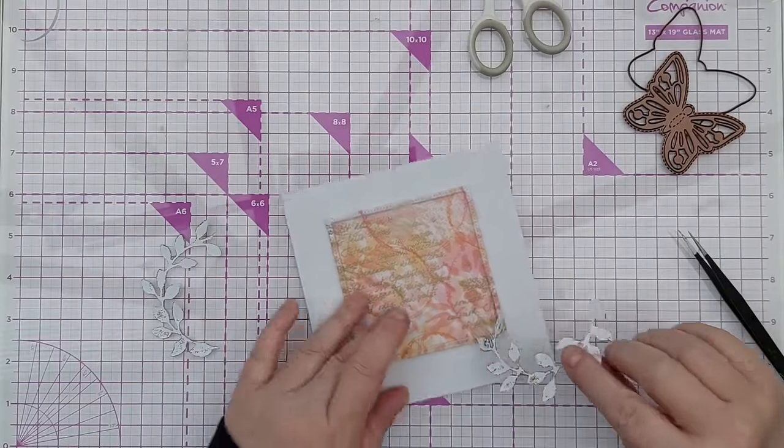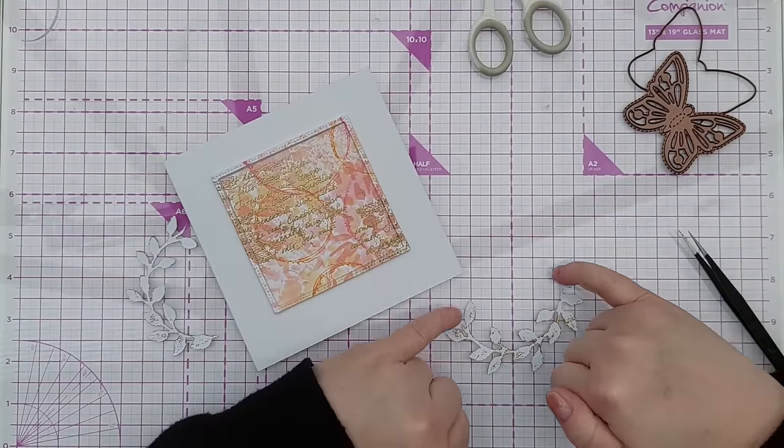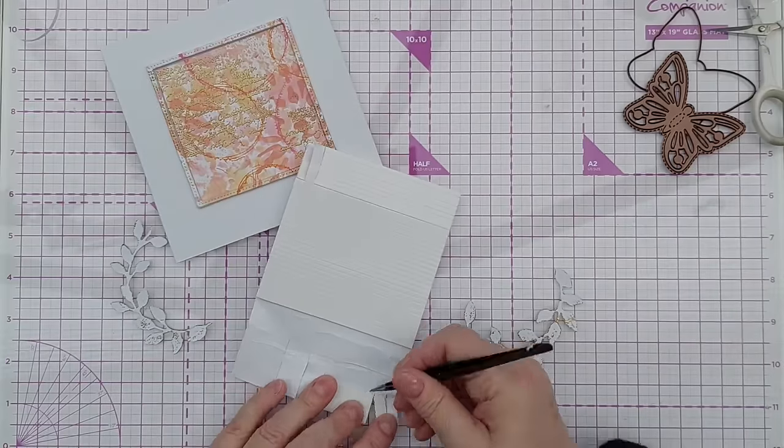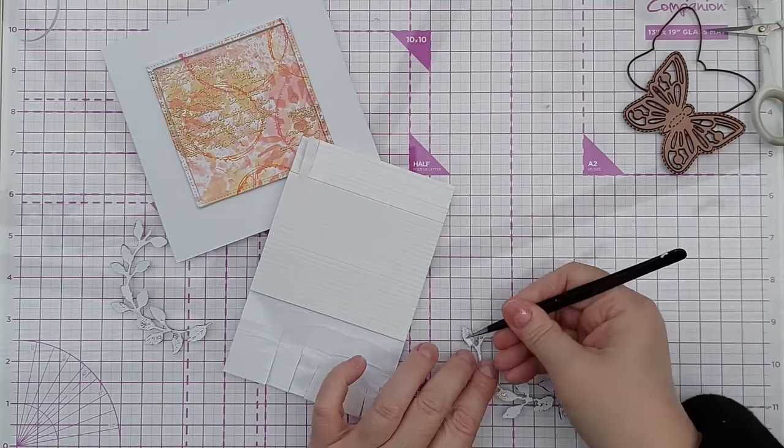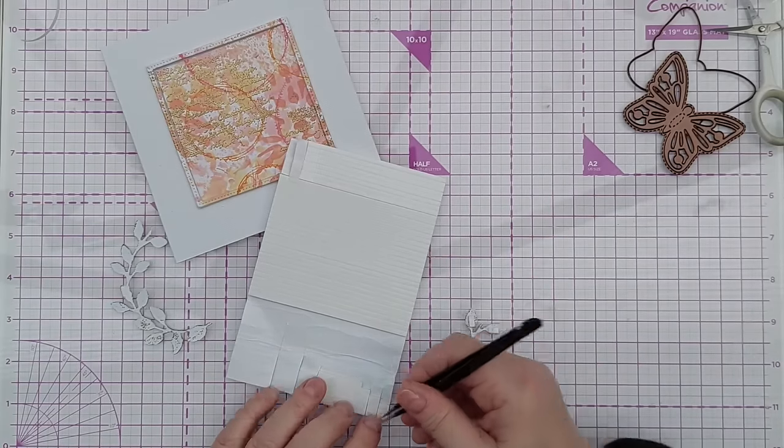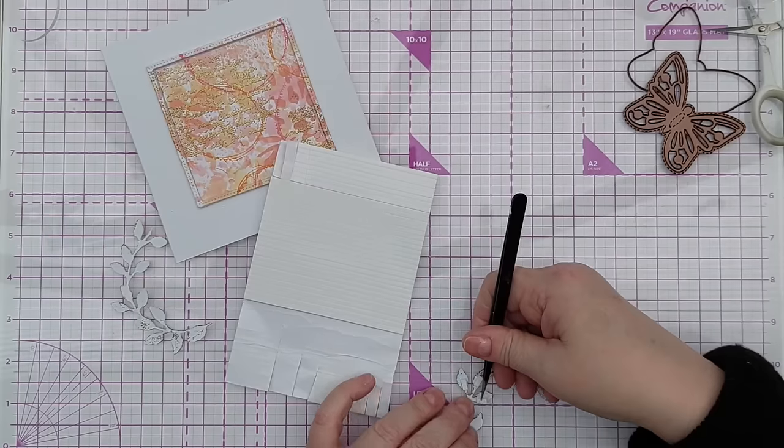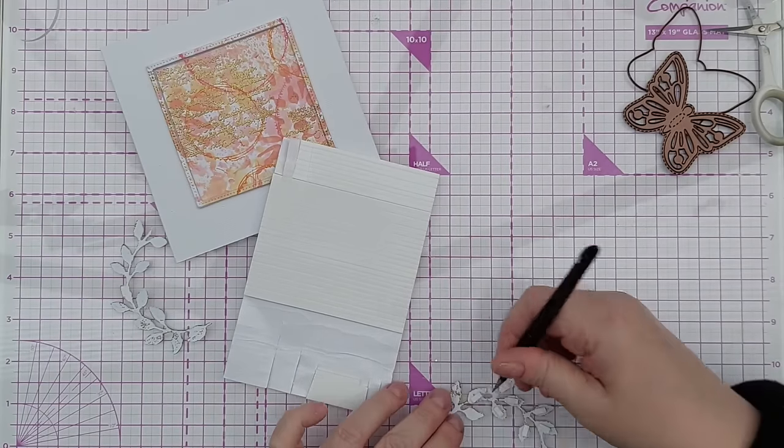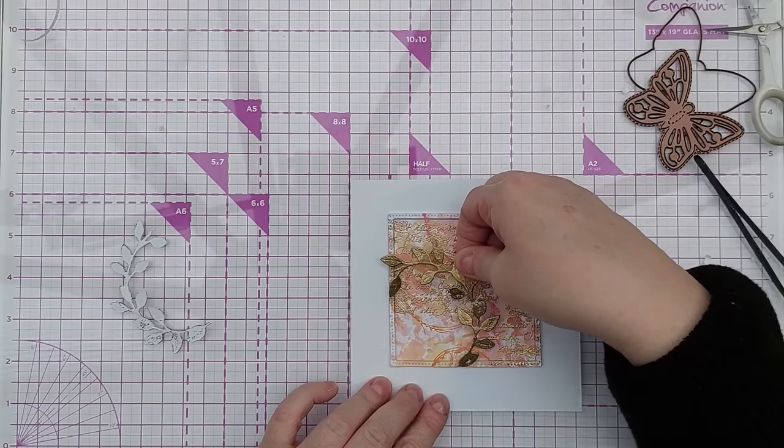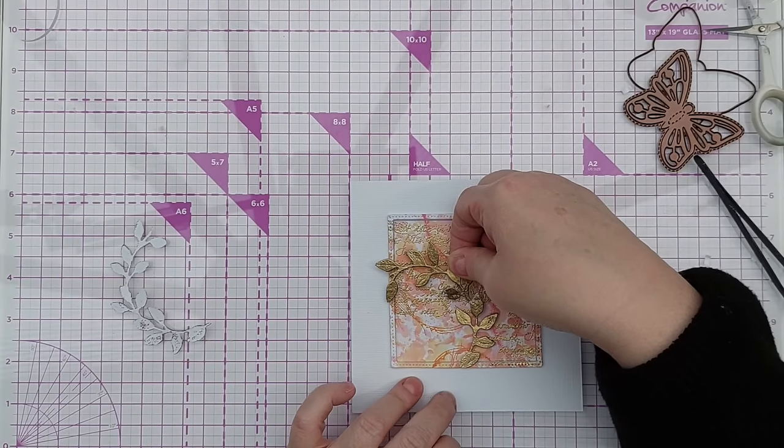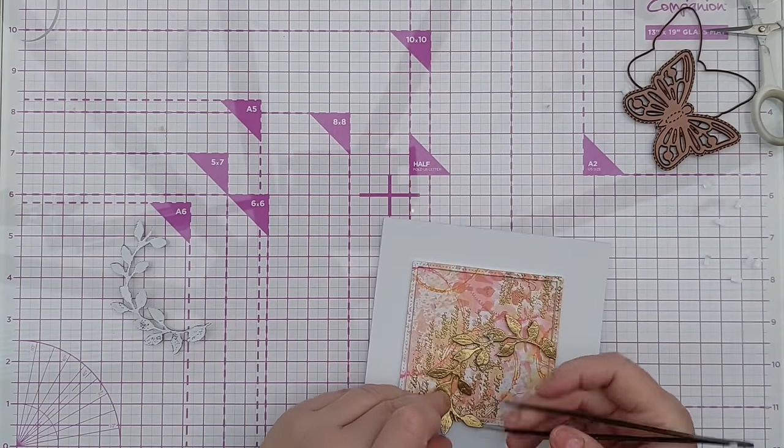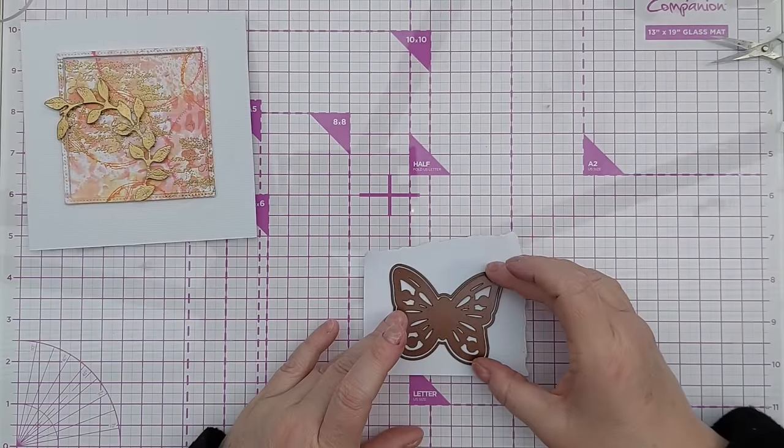And I'll pop a little bit of foam tape on all of these leaves and a little bit of glue right on the end. So that is done. I'll see if I can get this lined up easily in one go, so that should go there.